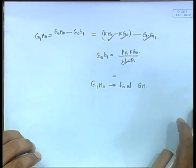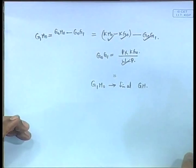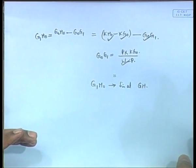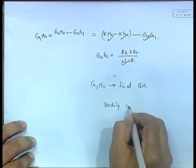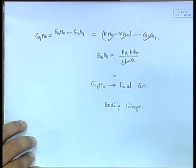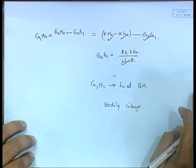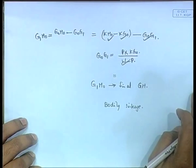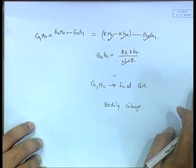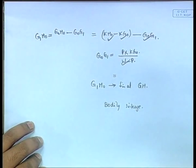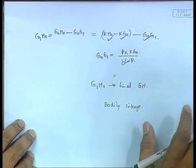To find the final draft: step one, find bodily sinkage; step two, find change of trim (moment causing trim divided by MCTC); step three, find change of trim aft (l/L × T) and change of trim forward; step four, add these to the initial drafts aft and forward respectively. This method is always the same whenever final drafts are asked.